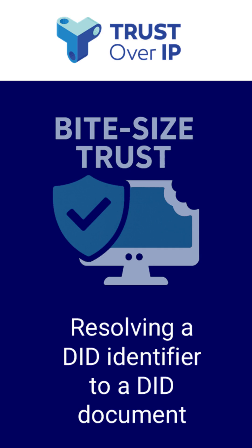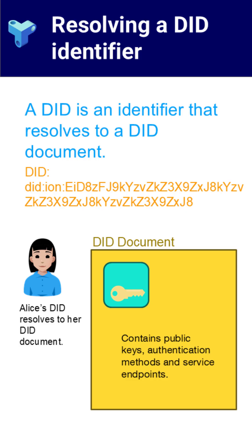A Decentralized Identifier, or DID, is a unique string that can be resolved into a DID document. This document typically contains public keys, service endpoints, and other metadata used to enable secure, verifiable interactions.